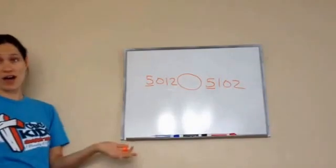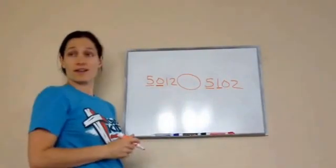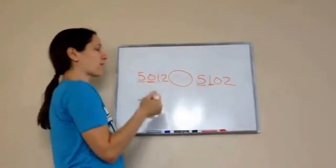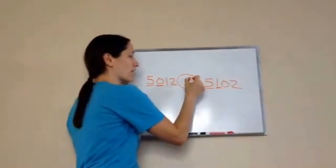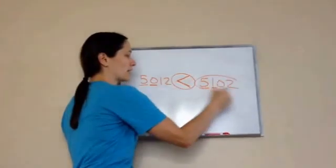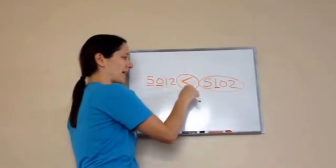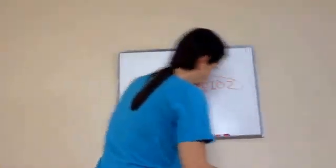Obviously, they're both 5. So, we need to go to the next one. Which one is bigger? 5,0 or 5,1? 5,1. So, this would be like 50 or 51. And so, obviously this one is the bigger. As you can see, Pac-Man is going to go eat this one up. So, we say 5,012 is less than 5,102.